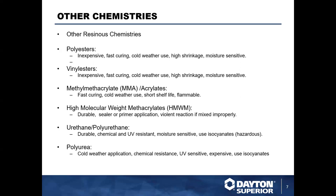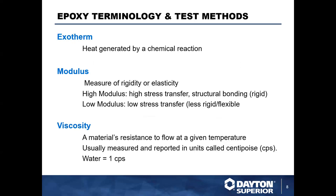HMWM — high molecular weight methyl acrylates — are durable and used as a sealer or primer, but if mixed improperly can result in a very violent reaction. Urethanes and polyurethanes are durable and chemical and UV resistant, but are moisture sensitive, use isocyanates, and can be hazardous. Polyurea offers cold weather application and chemical resistance but is UV sensitive, very expensive, and also uses isocyanates.